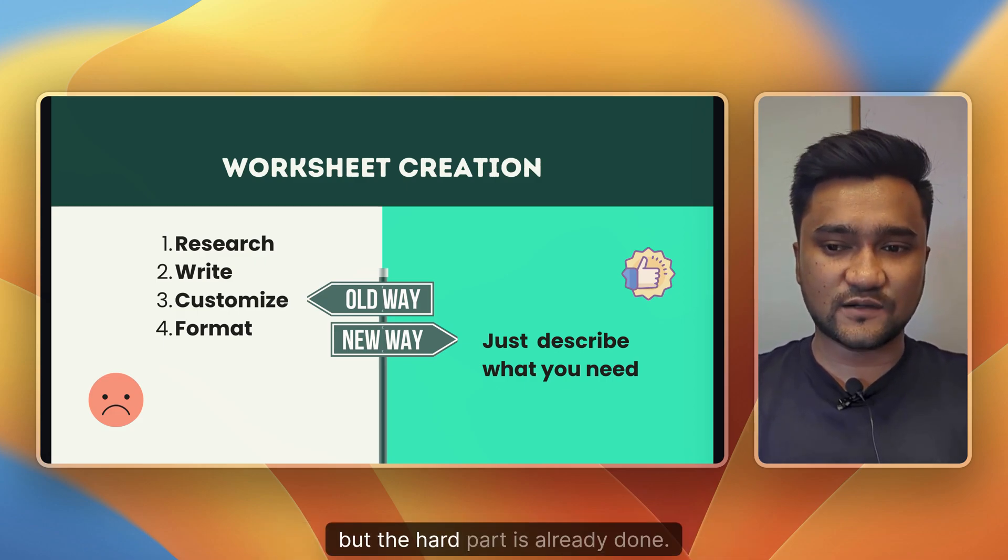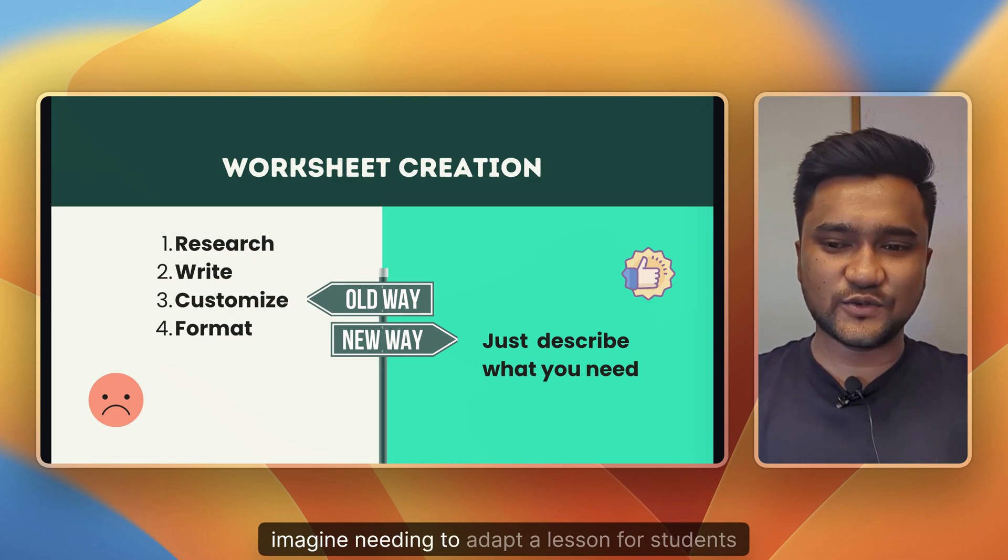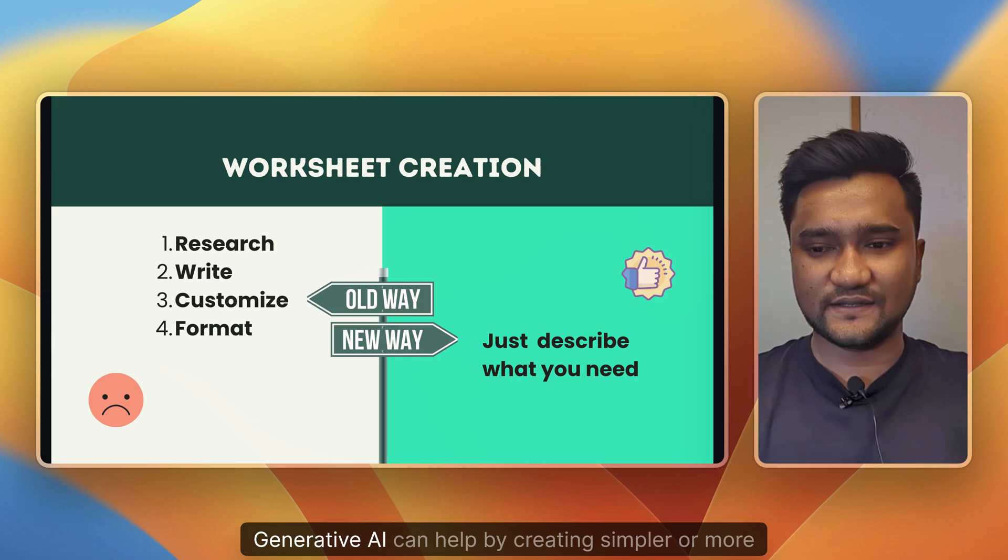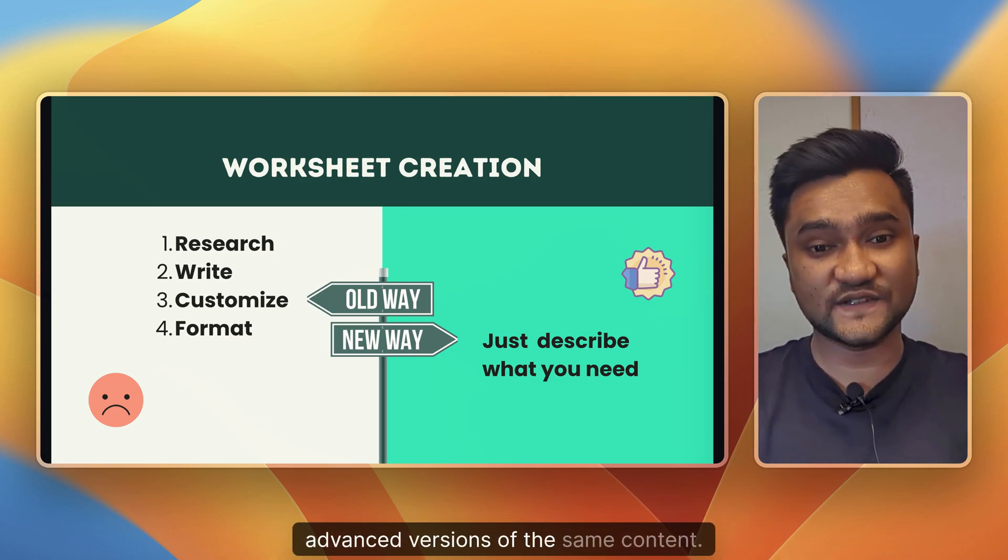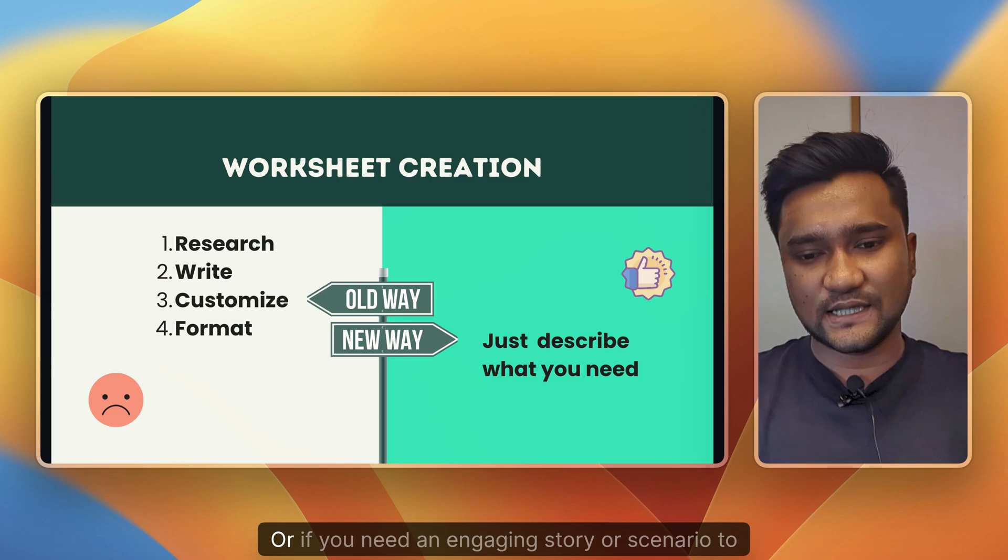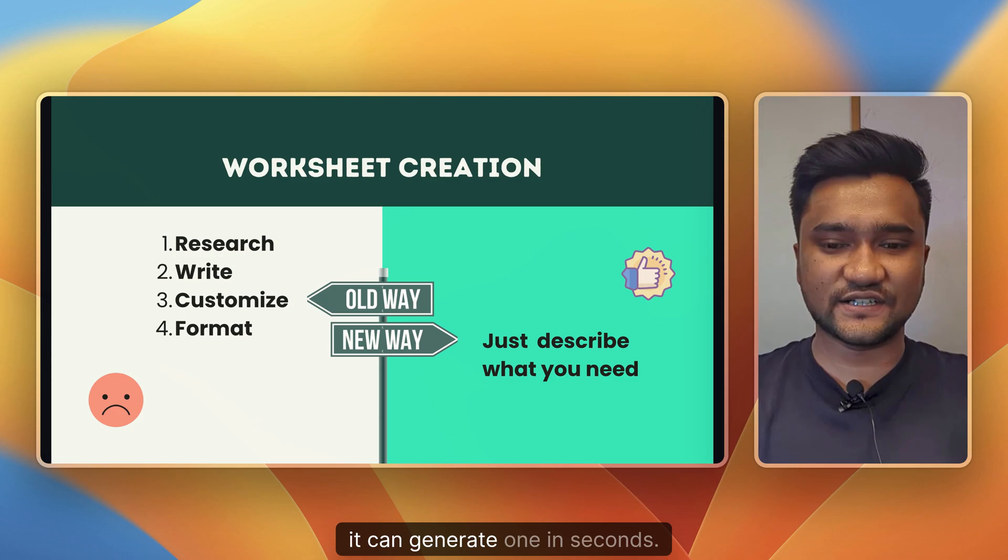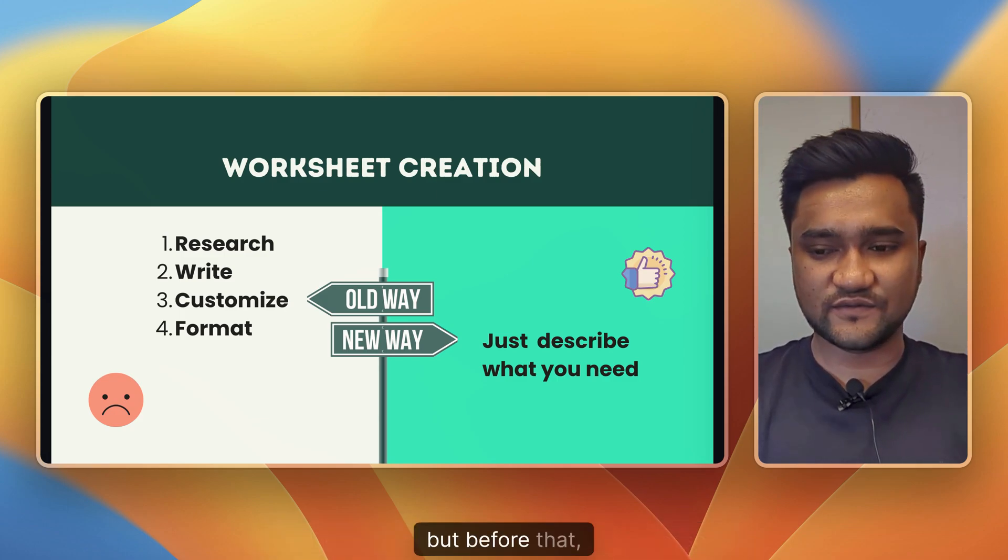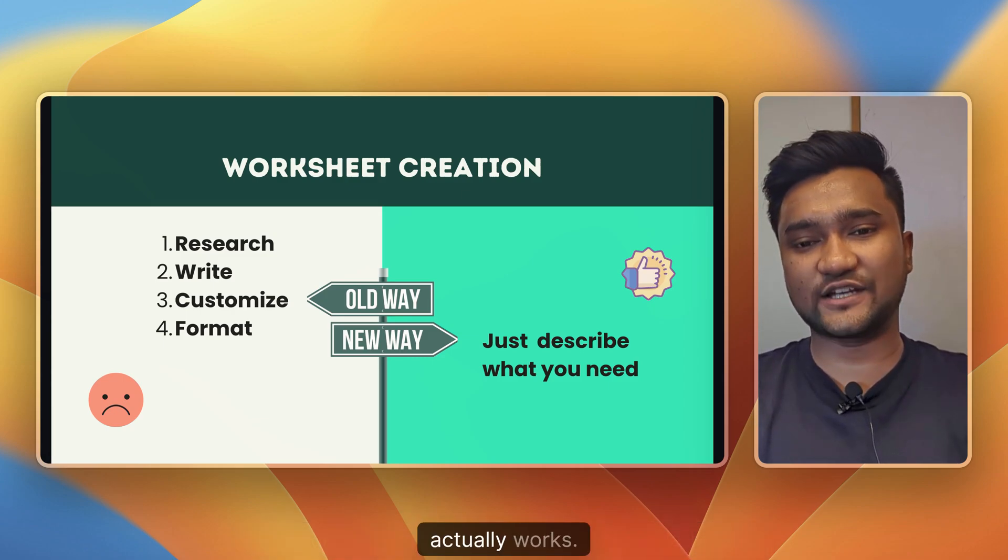Another example: imagine needing to adapt a lesson for students with different learning levels. Generative AI can help by creating simpler or more advanced versions of the same content. Or if you need an engaging story or scenario to explain a tough concept, it can generate one in seconds. We'll cover more examples in the later lessons, but before that, let's understand a bit more on how generative AI actually works.